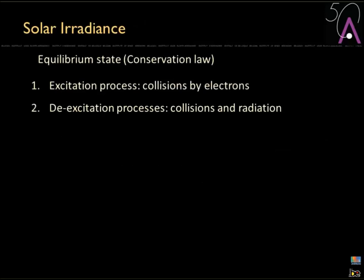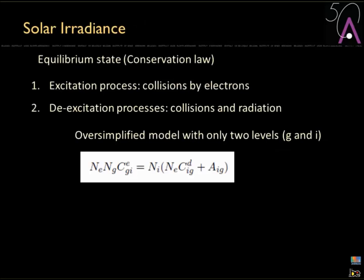We now consider the equilibrium state using everything we have discussed. We have two types of processes: excitation by electron collision, and de-excitation by electron collision and radiative decay. To show a simple example, I consider only two levels — the ground state and one excited level. This is very oversimplified, of course. In the principle of detailed equilibrium, you go from the ground to level E and then from level E back to the ground.